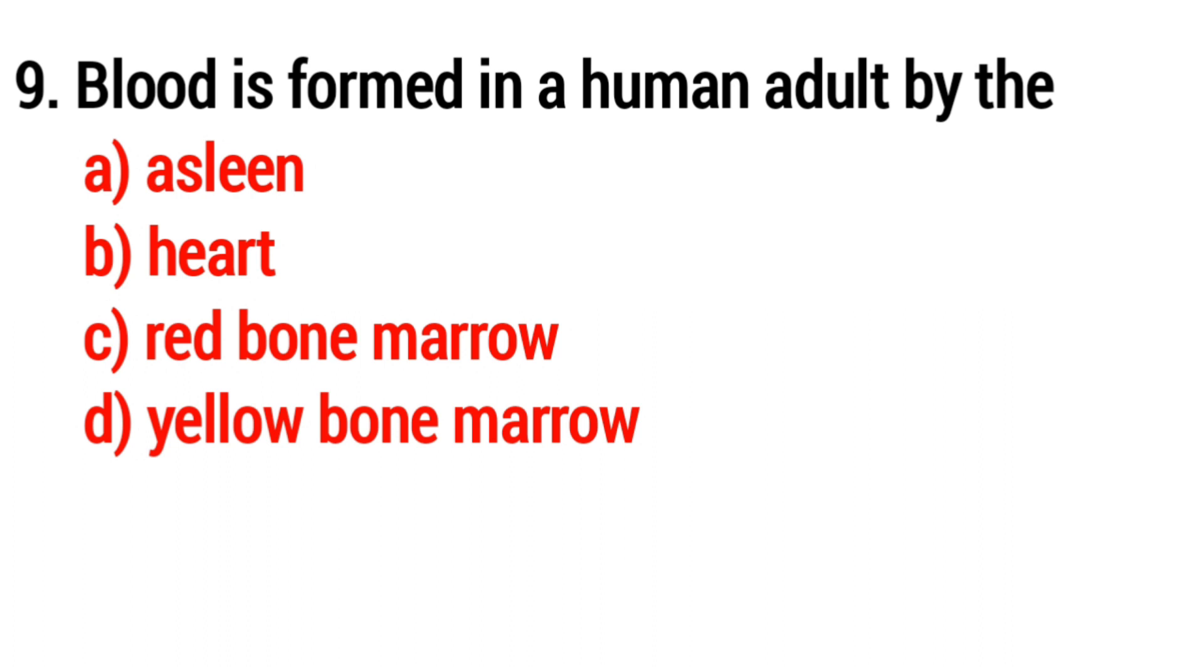Question number 9: Blood is formed in a human adult by the? The answer is Option C, red bone marrow.